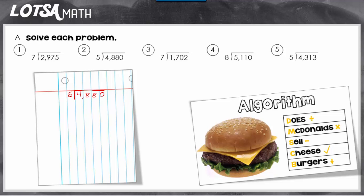48 divided by 5 is 9. 9 times 5 is 45. 48 minus 45 is 3. I'm going to compare, make sure it is less, and if it is I can go ahead and bring down my number to make round 2.